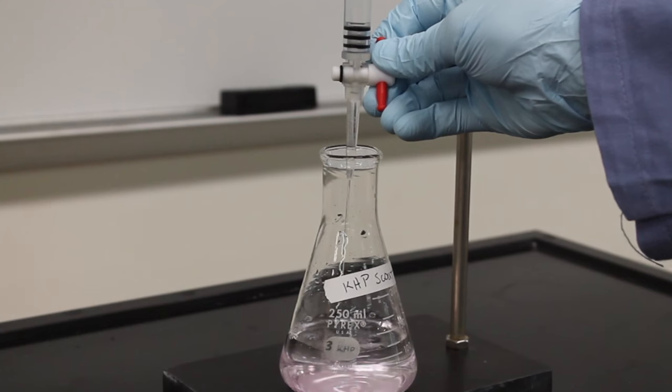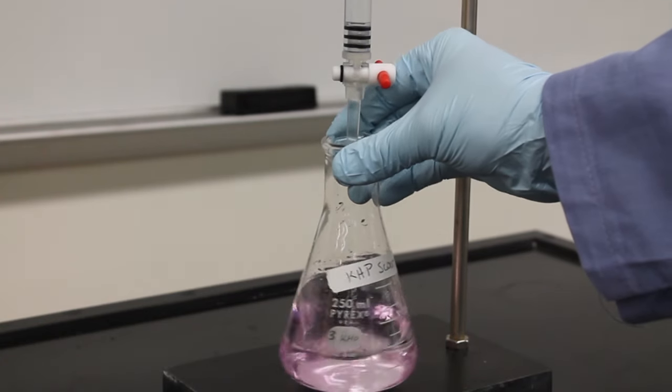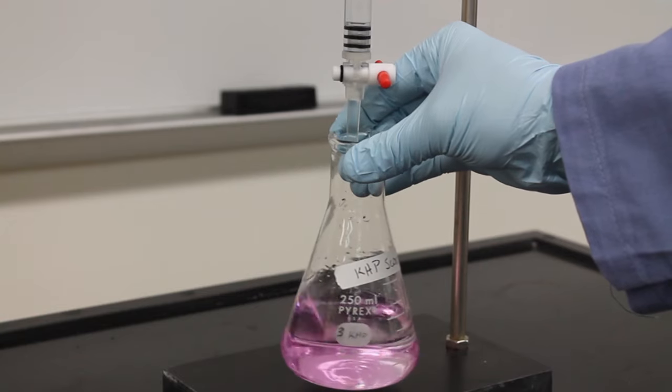The masses don't need to be equal, but they should be within 25mg of each other. Here my scout titration tells me that I need approximately 15.5ml of NaOH for each of my solutions.